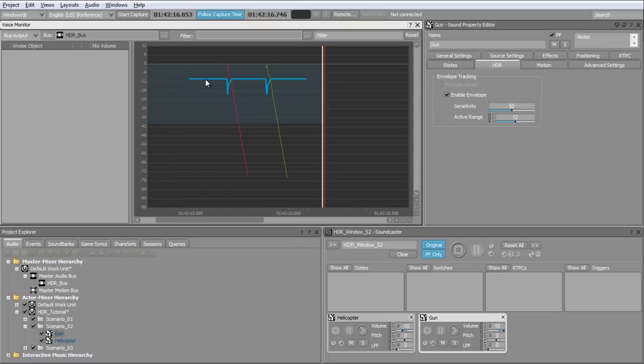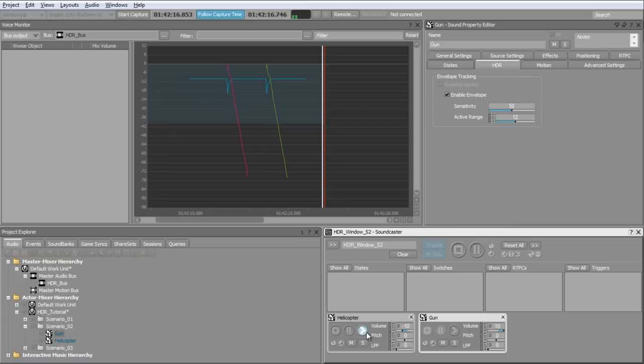Looking at the output side, we can clearly see that the helicopter volume curve inversely follows the gun curve. A good hint that helps sometimes when mixing is to mute the loudest sound to only hear the ducking effect applied on the lower sounds.